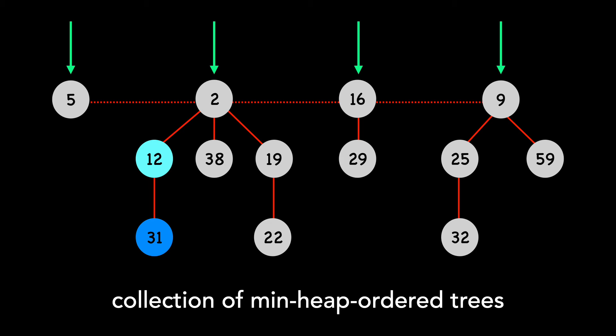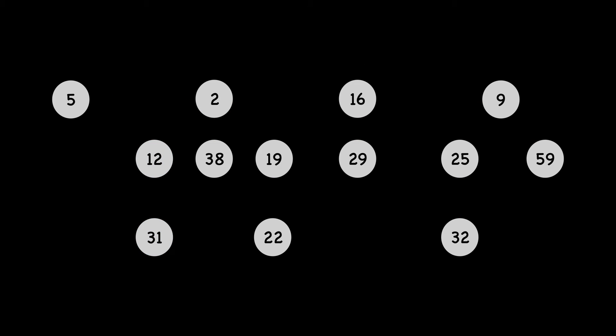Let's walk through the attributes of Fibonacci heaps. We maintain several pointers for each node. I'm going to remove the current lines as we color these in. A node has a pointer to its parent, and a node has a pointer to any one of its children. Notice this is any one of them, not all of them.